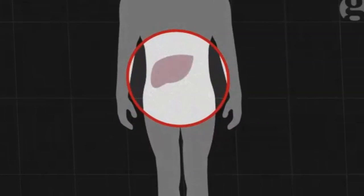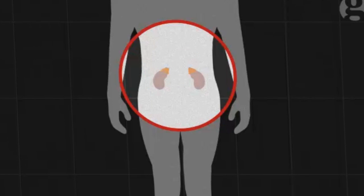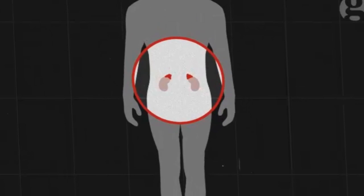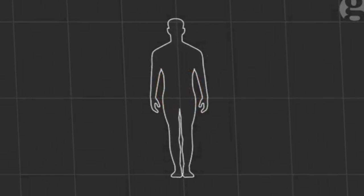Now established inside the body, the Ebola virus targets the liver and adrenal glands. Liver tissue is destroyed, affecting the production of proteins that help blood to clot. Damage to the adrenal glands, which sit on top of the kidneys, harms the body's production of steroids, which are necessary to control normal blood pressure.